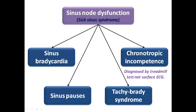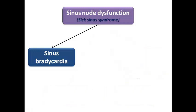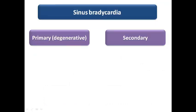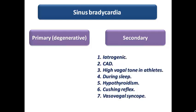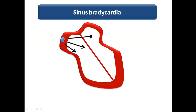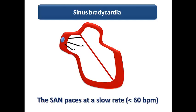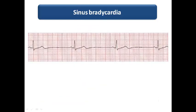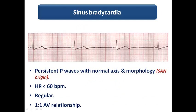Let's start with sinus bradycardia, one of the easiest ECG diagnoses to understand. Sinus bradycardia may be primary due to degenerative pathology in the SA node itself, or due to secondary causes as mentioned. The SA node is still working but slowed down in pacing the heart, so the heart rate of the SA node is below 60 beats per minute. The SA node is slightly lazy, causing the heart rate to drop below 60.